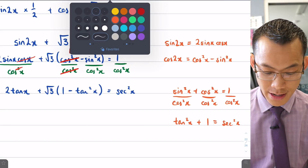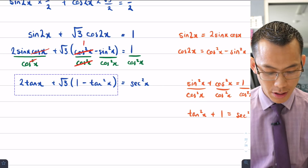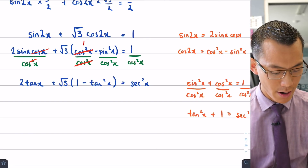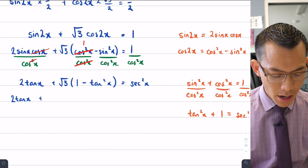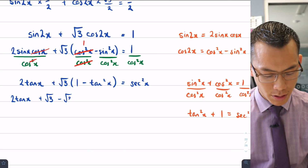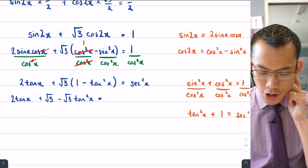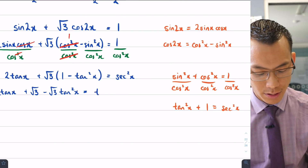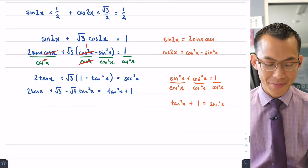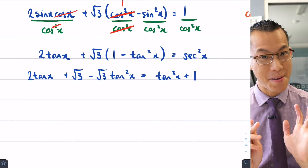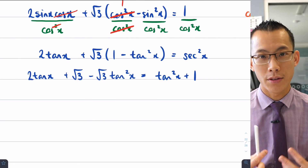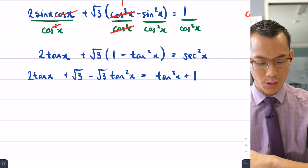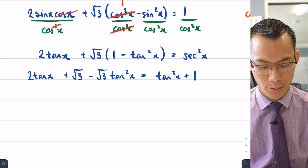Substituting sec²x = tan²x + 1 on the right-hand side, and expanding the left: 2 tan x + √3 − √3 tan²x = tan²x + 1. Everything is now in terms of a single trigonometric function, tan x. It's a bit of a mess, but it's a mess I can deal with — a quadratic in tan x.